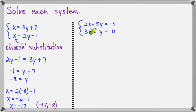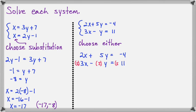We could make both of these coefficients add up to 0 if we could make the bottom y term be negative 5y. So let's multiply the bottom equation by 5, and then we will have 2x plus 5y equals negative 4 on top, 15x minus 5y equals 55 on the bottom. That will give us 17x equals 51, so x equals 3.